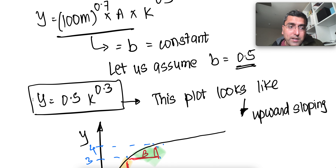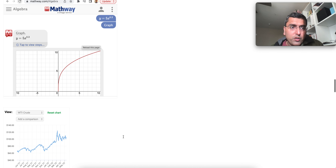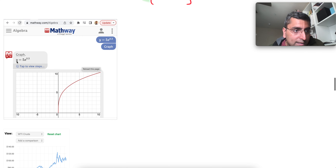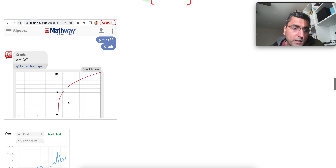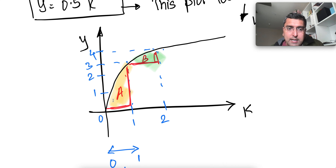If we plot y = 0.5 · K^0.3, we get an upward-sloping curve — you can verify this easily on mathway.com by plotting y = 0.5 · x^0.3. The curve slopes upward but its initial slope is much higher, and the slope reduces, reduces, reduces over time.